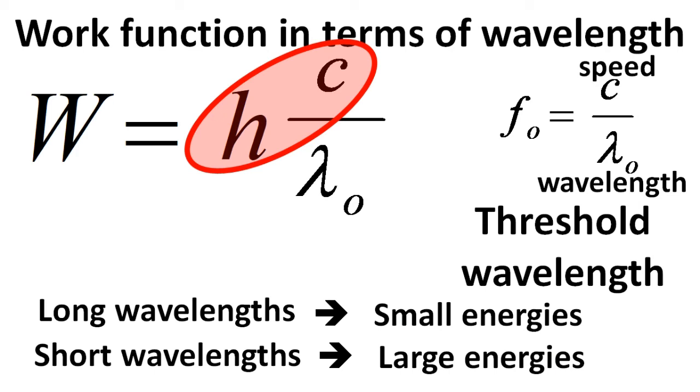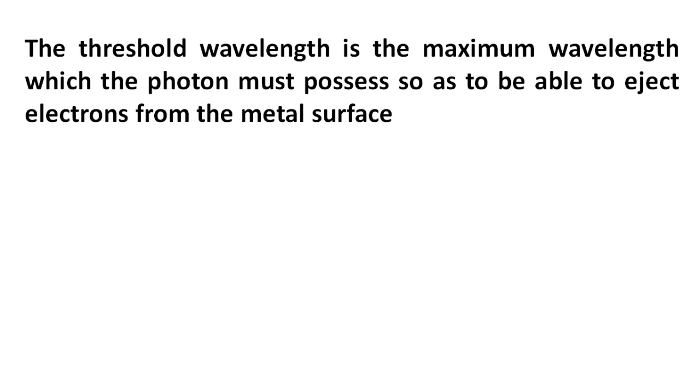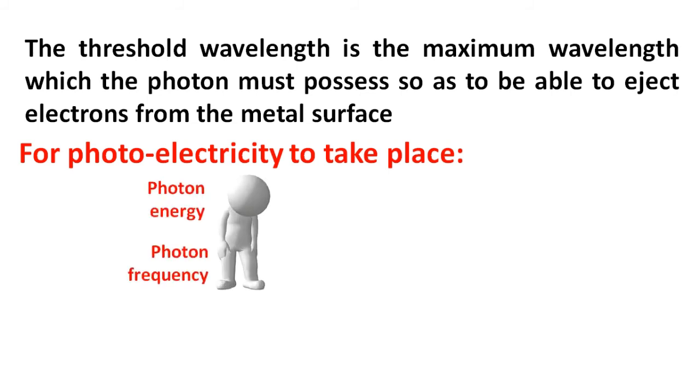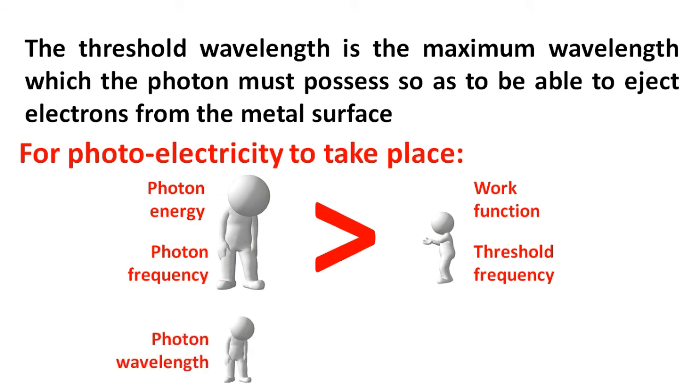Yes. The threshold wavelength is therefore the maximum wavelength which the photon must possess so as to be able to eject electrons from the metal surface. I get it. For photoelectricity to take place, the photon energy or frequency must be greater than the work function or threshold frequency. But the photon wavelength must be smaller than the threshold wavelength. Perfect summary.